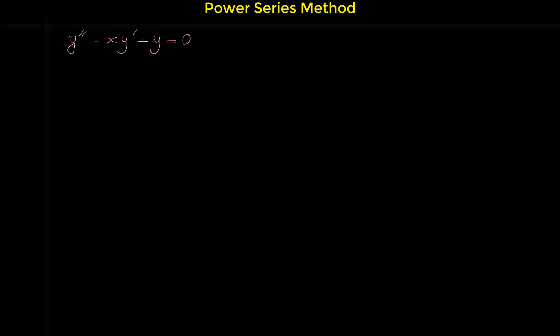The first step in solving a differential equation with the power series method is that we suppose the solution y is a power series. We are looking for the function y that satisfies this differential equation, and we suppose y equals the power series sigma from n equals zero to infinity of aₙ xⁿ.